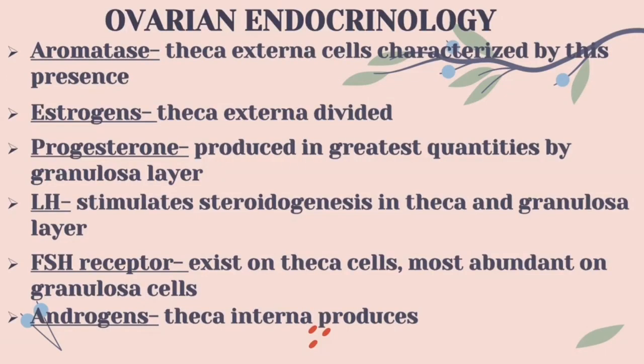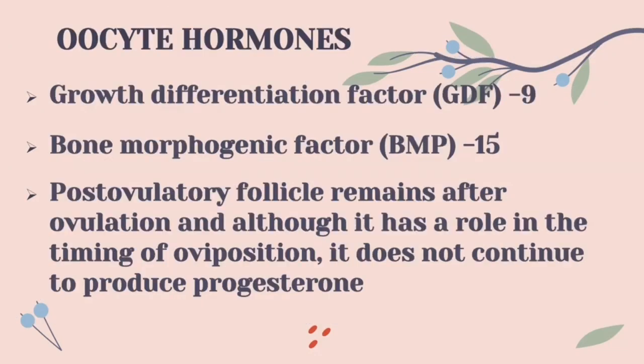Only normal sperm can enter the sperm storage. For the ovarian endocrinology, it is composed of some hormones like aromatase, estrogens, progesterone, luteinizing hormone, FSH receptor, and also androgens, which are produced by the teca interna. The oocyte hormones are composed of the growth differentiation factor and bone morphogenetic factor.